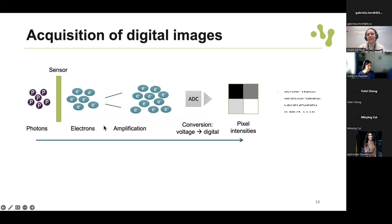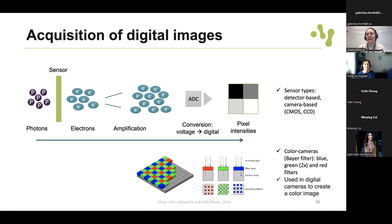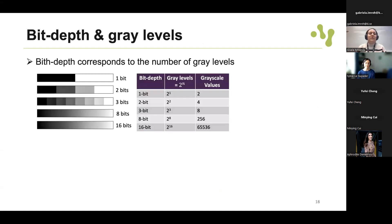The pixel value depends on the acquisition system - it's a process of transforming light signal into digital signal. It involves a sensor, which can be detector-based or camera-based, which transforms the photons into electrons. The signal is amplified and then converted from voltage to digital signal. Pixel intensities depend on the sensor and the range of values that can be represented. For color images, we have a Bayer filter for color cameras with blue, green, and red channels, used to create a color image in digital cameras.